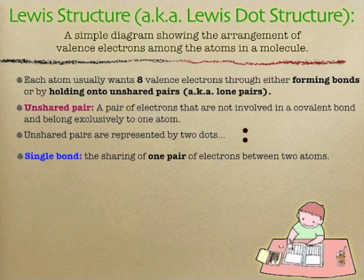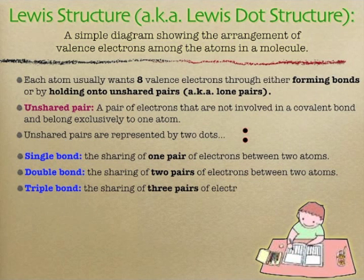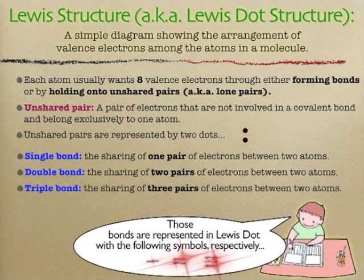Bonds are represented by lines. Each line represents sharing of one pair. Remember, these are covalent bonds. So if you see one line, that represents two dots or two electrons. If you see two lines, that represents four. That's a double bond, shorter and stronger.